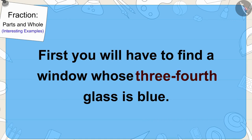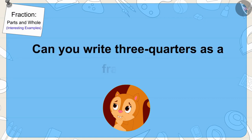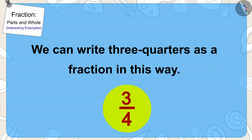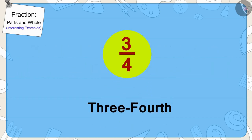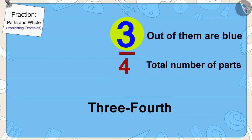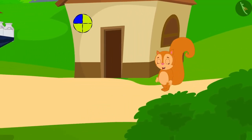The window whose three-fourths glass is blue. Children, can you write three quarters as a fraction? Yes, we can write three quarters as a fraction in this way. Children, do you remember that here the number four shows that our whole is divided into four equal parts, and three parts out of them are blue.